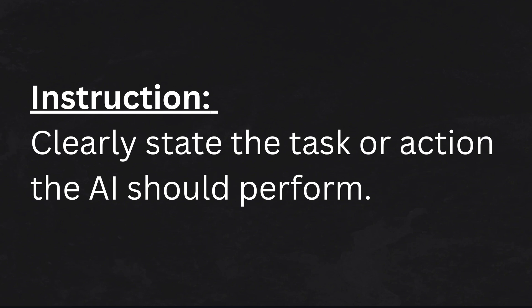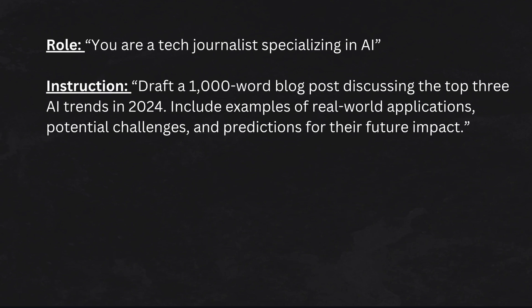Next, Instructions. Vague instructions lead to vague results, so be clear and specific about what you want. Instead of saying 'write a blog post about AI trends,' say 'draft a thousand-word blog post discussing the top three AI trends in 2024, include examples of real-world applications, potential challenges, and predictions for their future impact.' The more specific you are, the less editing you'll need later.